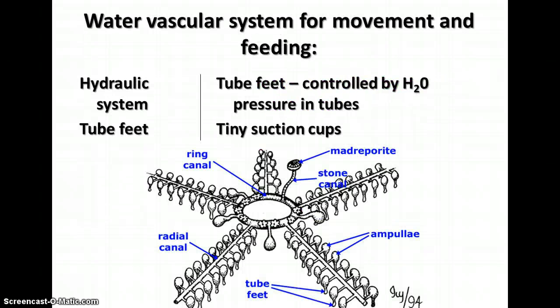This diagram shows you the water vascular system. It's used for movement and feeding, and it's basically a hydraulic system with little tube feet controlled by water pressure — they act like tiny suction cups. You don't have to know a whole lot about the structure here; we will label a diagram in your packet, and a lot of the terms shown on this slide are ones that you'll label. If you were not in class when we labeled it, you can pause here and refer back to this slide to label parts of the starfish diagram in your packet.